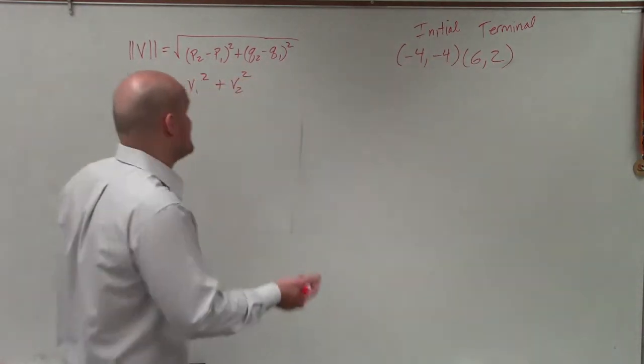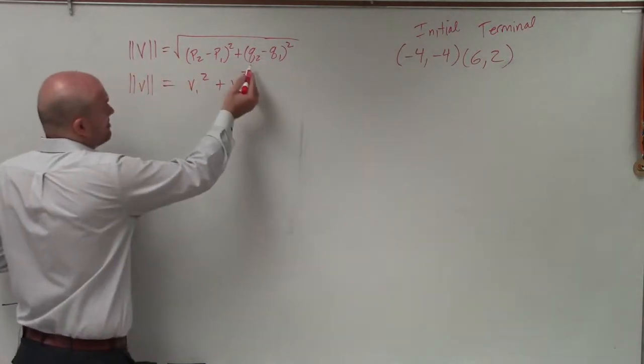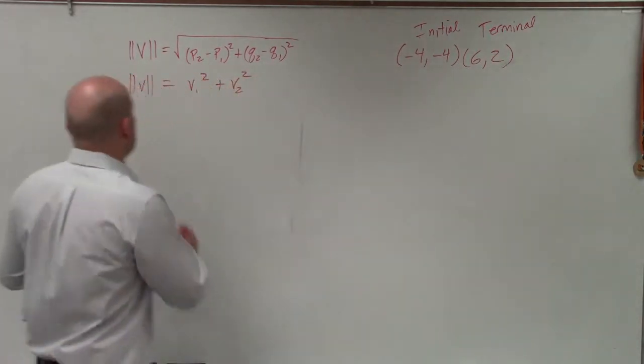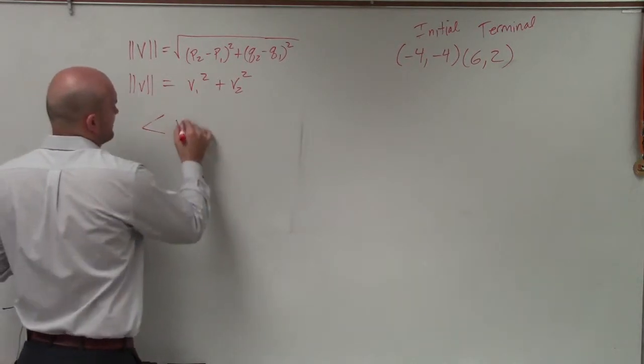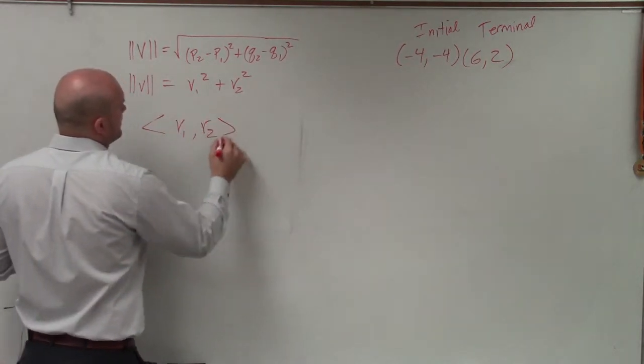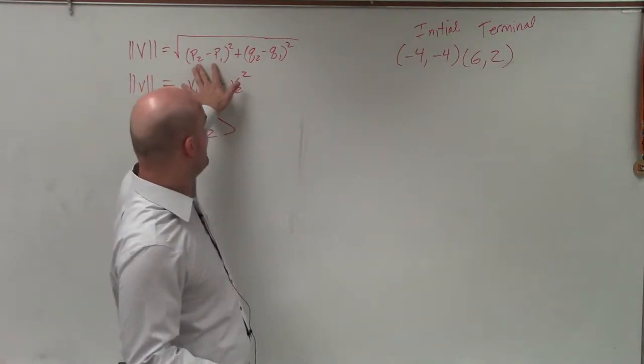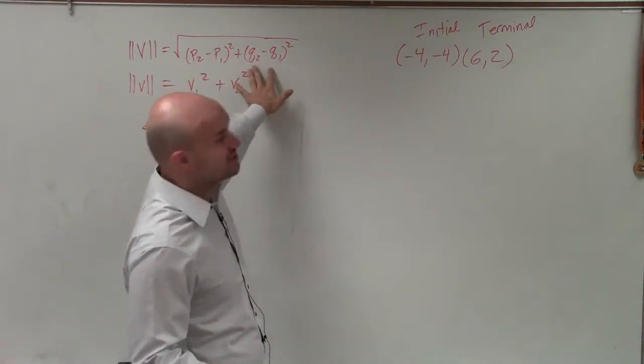More commonly, you can actually label them and plug them in to determine the magnitude. But a lot of times what we like to do is write them in component form. Component form is v1 comma v2. To determine component form, all we need to simply do is determine p2 minus p1 and q2 minus q1.